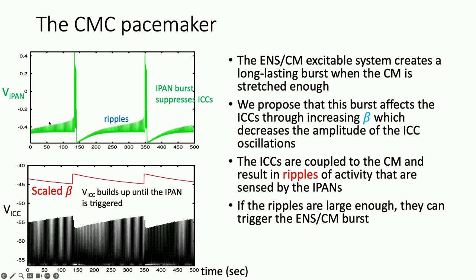Putting this all together with the muscle, we see in the voltage of our IPAN neuron and the voltage of our ICC: small ripples in the muscle occur until there is a large burst — the CMC — then small ripples build up again and there is another large burst. This reflects what beta is doing in that cell based on its interaction with the neuron. When ripples become large enough, they appear to be what triggers the CMC.